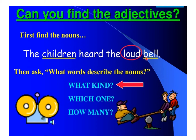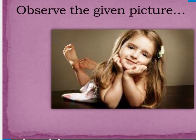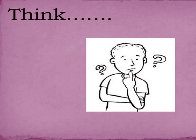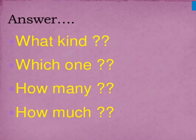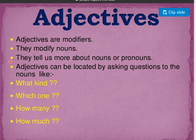The children heard the loud bell. Bell and children are nouns. The word 'loud' is a describing word which describes the noun bell. What words describe the nouns? Loud describes the noun bell — what kind of bell is it? It is a loud bell. Observe the given picture. Can you see the small girl? Can you describe this girl? You can answer on the basis of what kind, which one, how many, and how much.